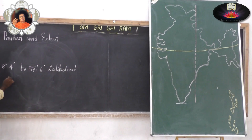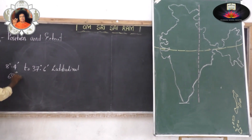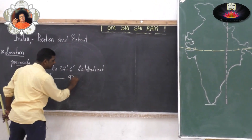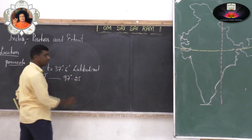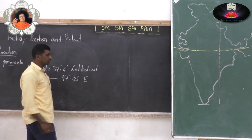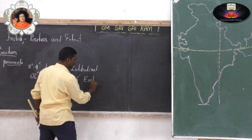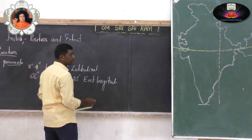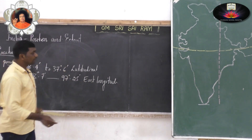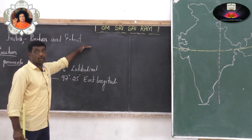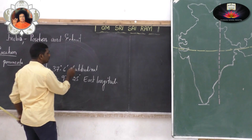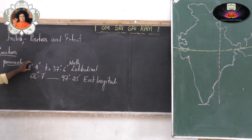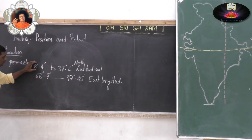Now we are going to see the longitudinal position. It is about 68 degrees 7 minutes to 97 degrees 25 minutes east longitude. This is east longitude. India is located in the northern hemisphere, that is why it is north latitude.